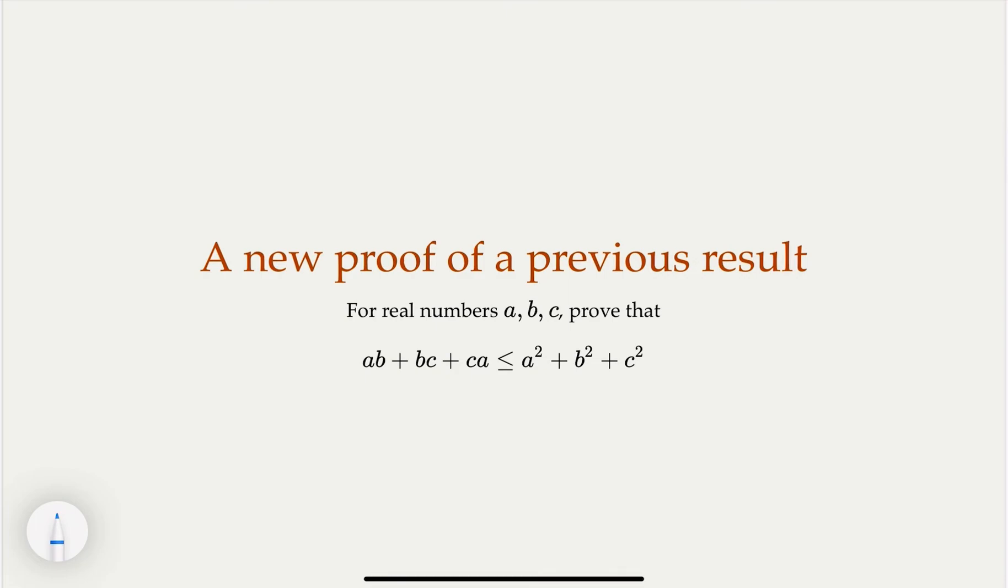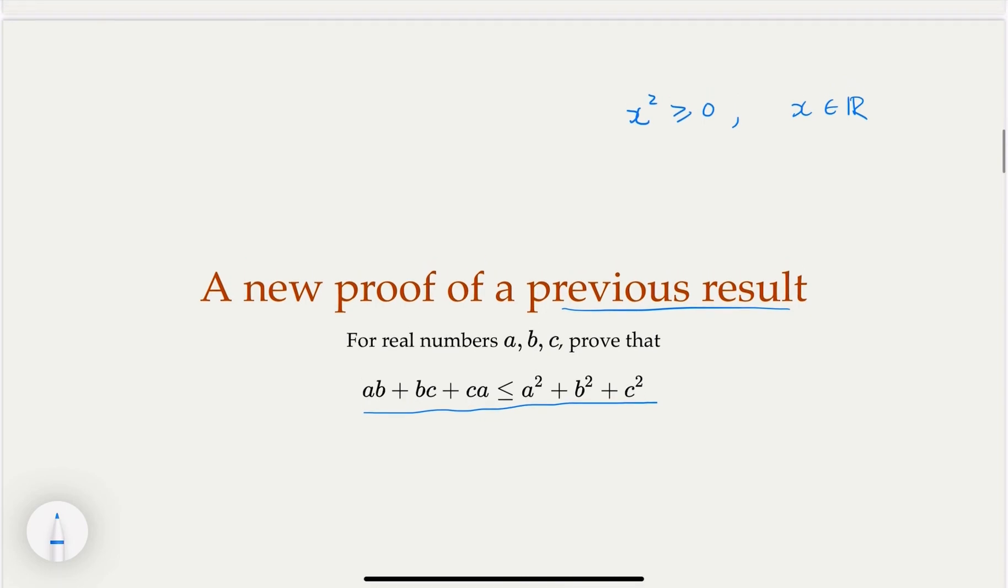So, now, with this, as a tool, we can reprove the previous result. So, we have, in the previous lecture, we proved this statement by looking at the fact that any real number, when you square it, it's going to be non-negative. So, based on that, we were able to prove this, but here, we're going to use the rearrangement inequality to prove it. So, again, for that, you need two sequences.